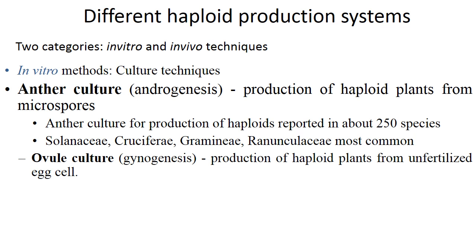Coming to an elaborative view of haploid production systems. There are two categories: in vitro and in vivo technique. The in vitro method is about culture techniques like anther culture and ovule culture. In ovule culture, we can call it either ovule culture or ovary culture depending on which part is used.